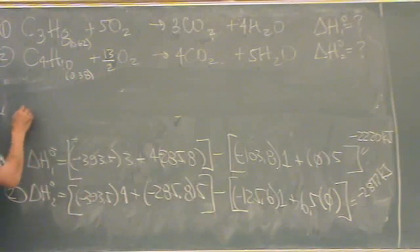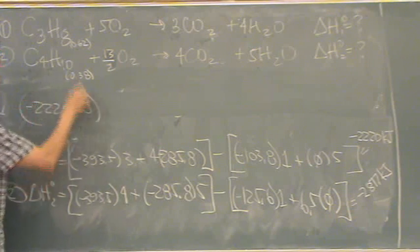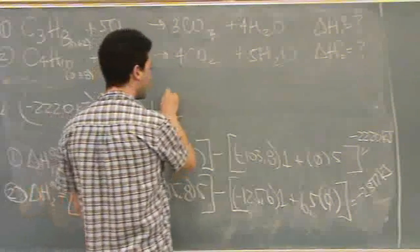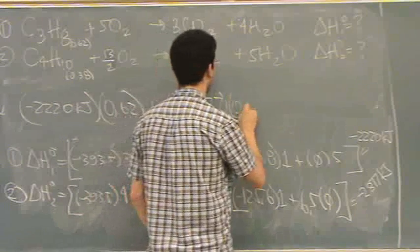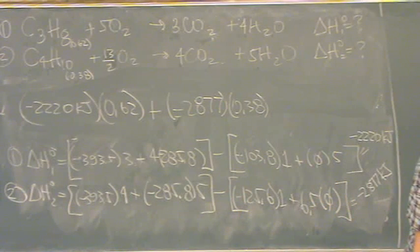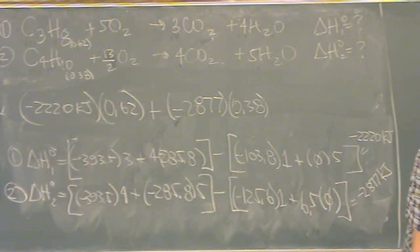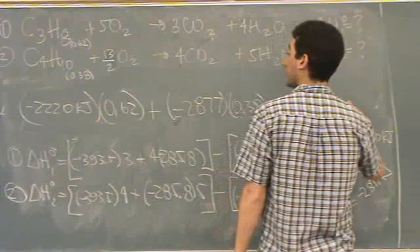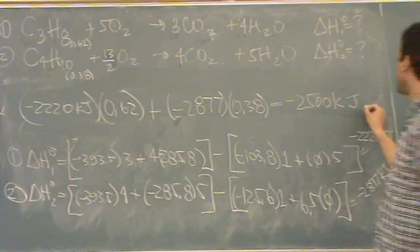All you're going to do is take the first number, minus 2220 kilojoules, multiply it by its mole fraction. And then, take the second number, minus 2877, multiply it by its mole fraction. And really, that's it. And the final answer is minus 2500 kilojoules. Yes. There's your answer.